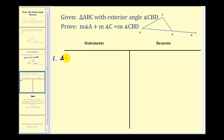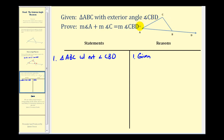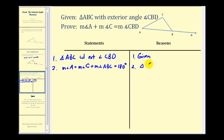Let's take the given: we have triangle ABC with exterior angle CBD. Now let's give the equation for the sum of the interior angles. We have the measure of angle A plus the measure of angle C plus the measure of angle ABC equals 180 degrees. This is by the triangle sum theorem.